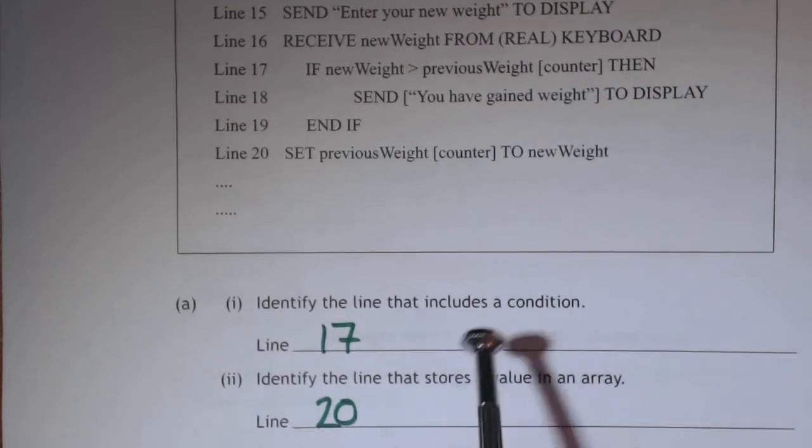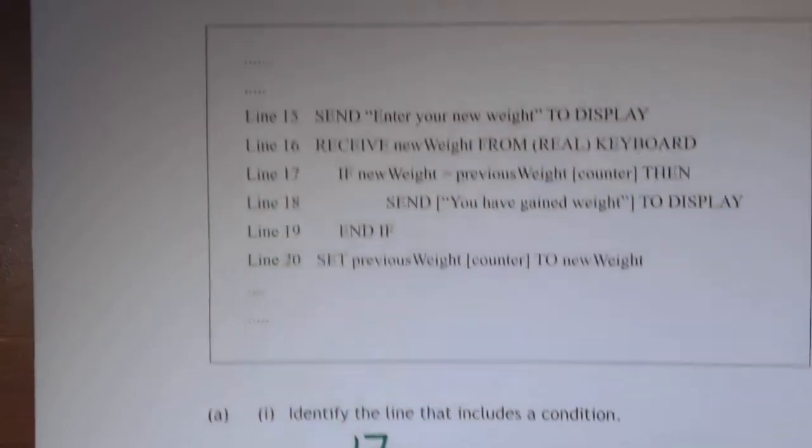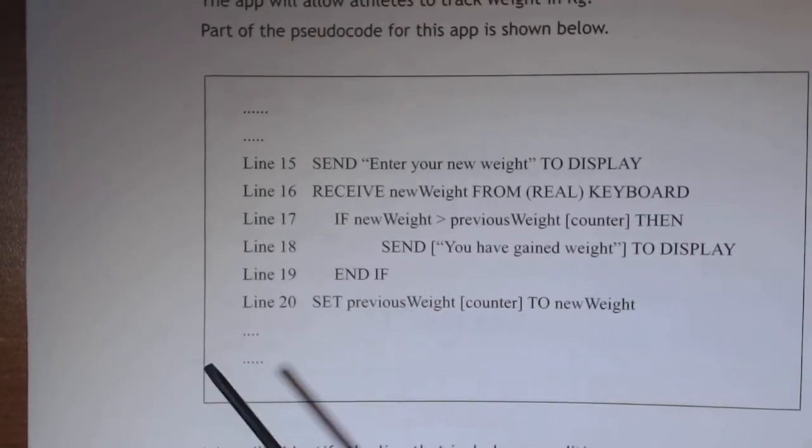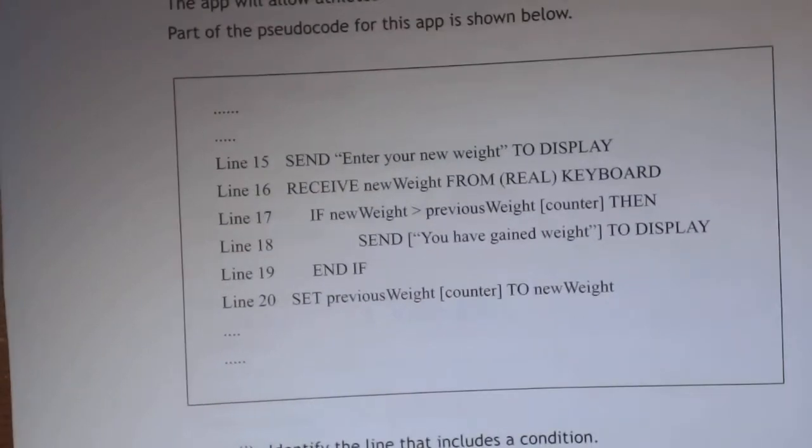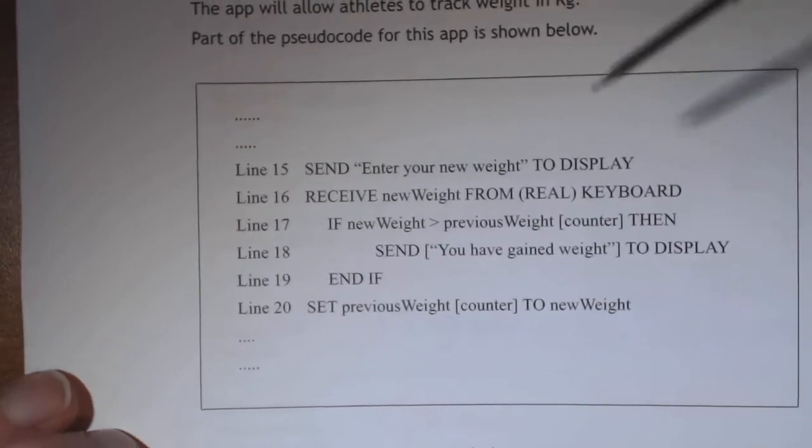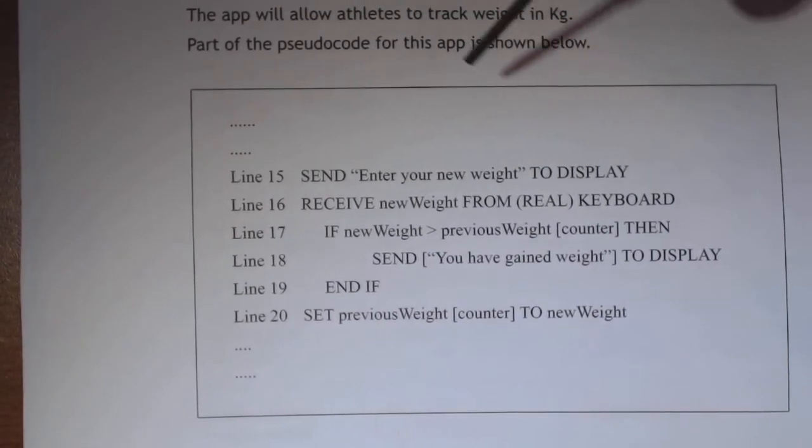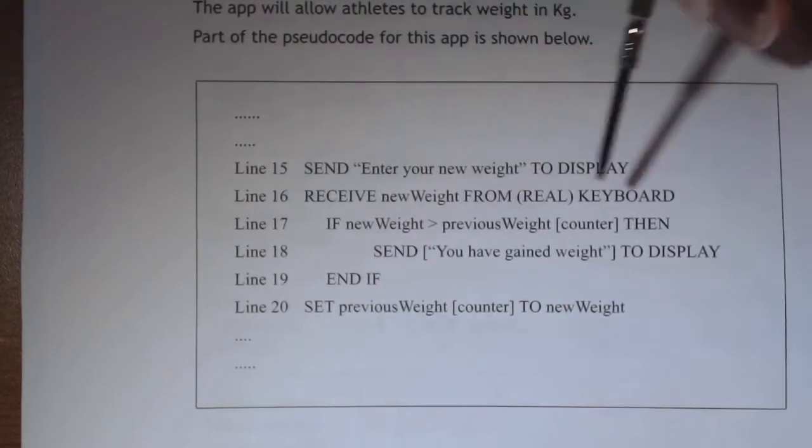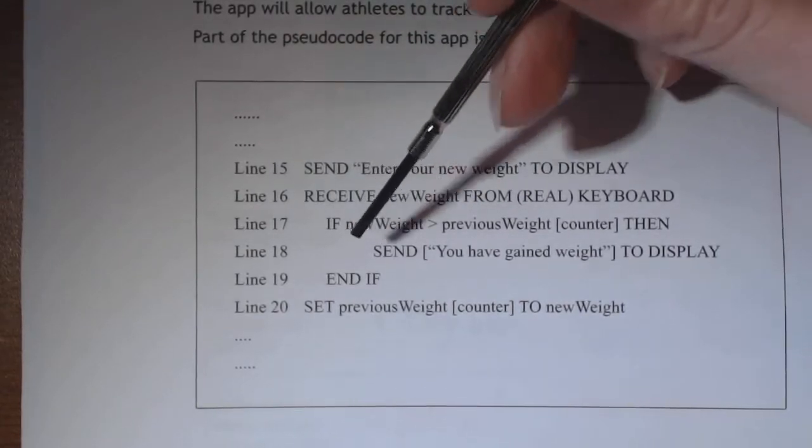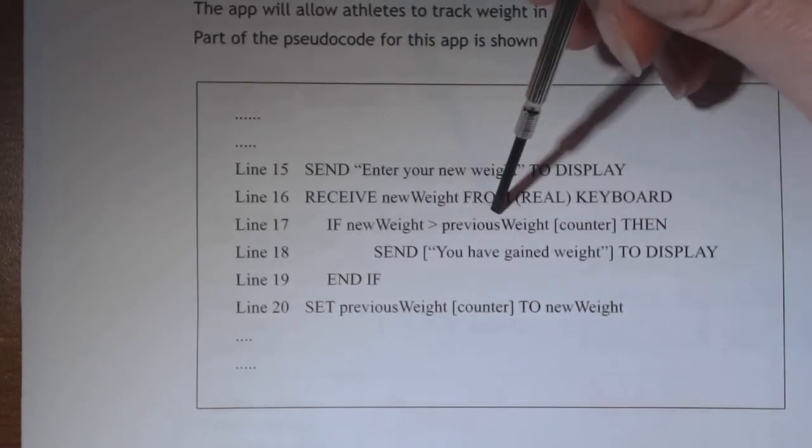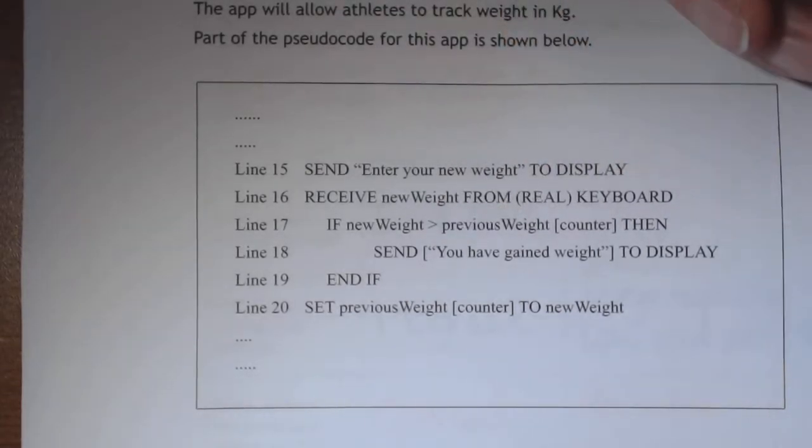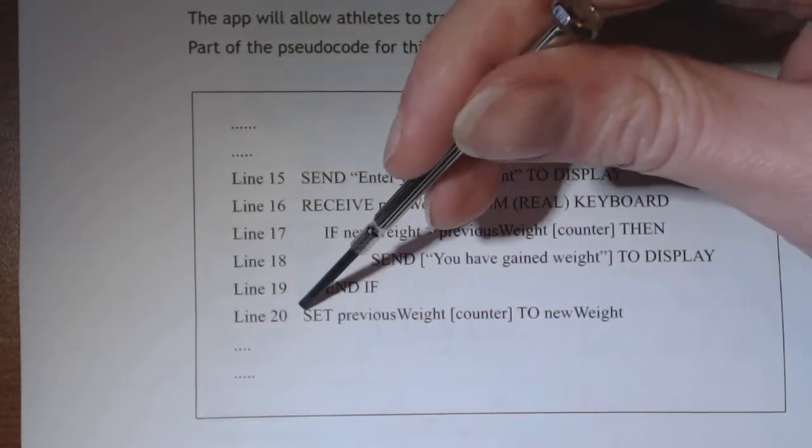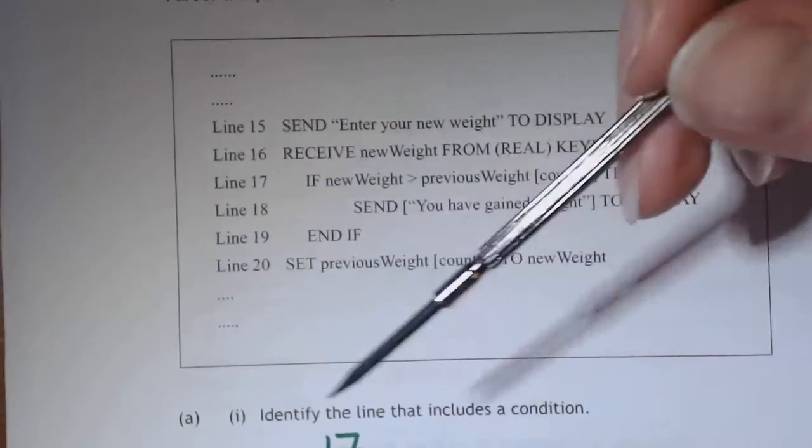Then it's saying identify the line that includes a condition. So a condition is really you're asking a question, it depends on the answer what the programme's going to do. It's almost like the programme's asking a question. And if you look at line 17, it's basically saying it's taking in a new weight from the keyboard and saying if this new weight is bigger than the previous weight, then you've gained weight. So it's doing something. Obviously if it wasn't, then it just goes on to the next line, so that's a condition.